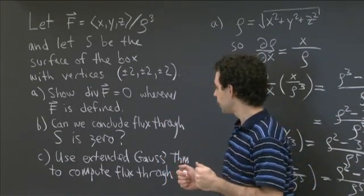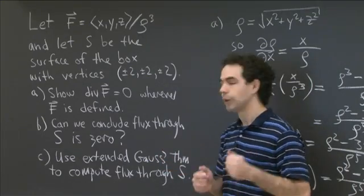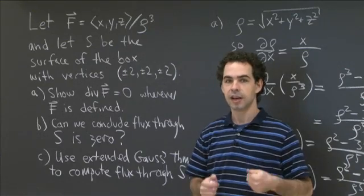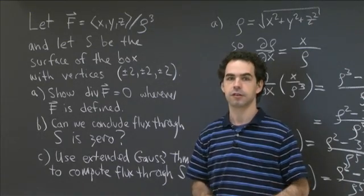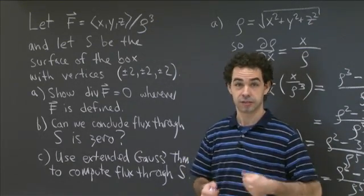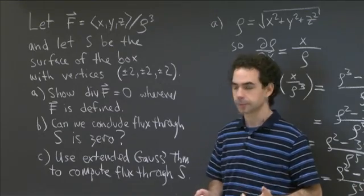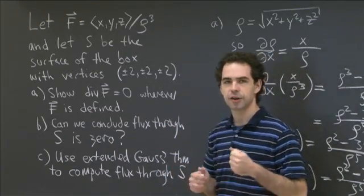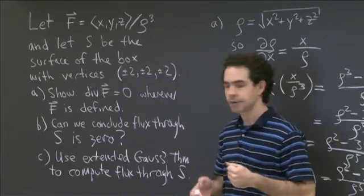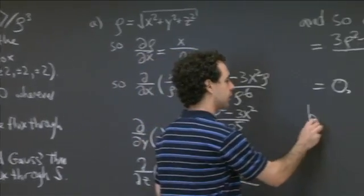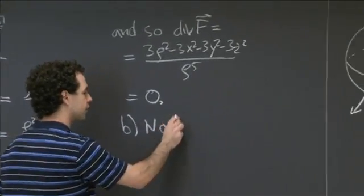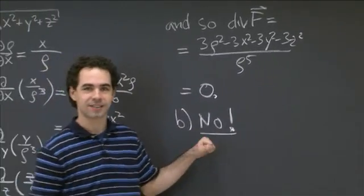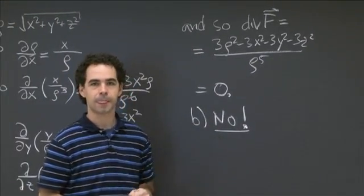Since we can't apply the divergence theorem, we aren't allowed to conclude immediately that the flux through this surface is 0. So the answer is no — we can't conclude that the flux through S is 0, because one of the hypotheses of the divergence theorem isn't satisfied: namely, the field isn't defined everywhere inside the surface.